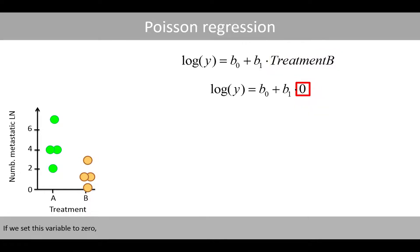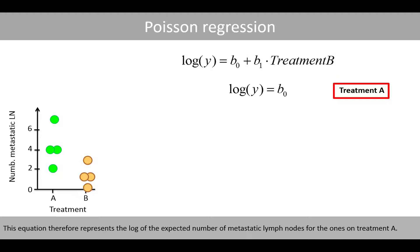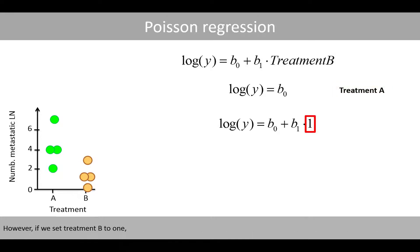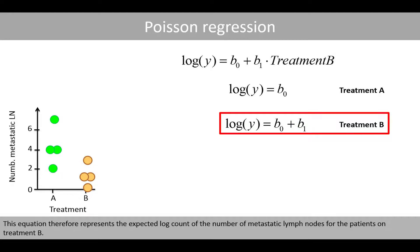If you set this variable to zero, this term becomes zero and the right-hand side then only includes the intercept. This equation therefore represents the log of the expected number of metastatic lymph nodes for those on treatment A. However, if you set treatment B to one, this term simplifies to just B1. This equation therefore represents the expected log count of the number of metastatic lymph nodes for patients on treatment B.